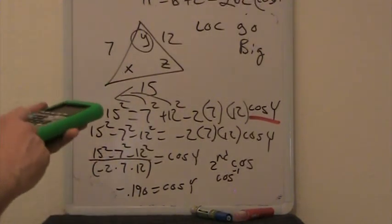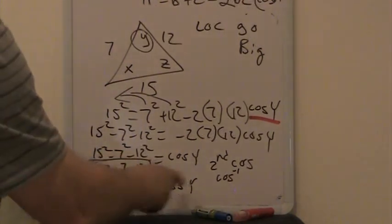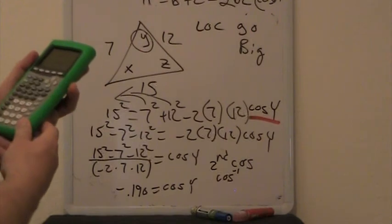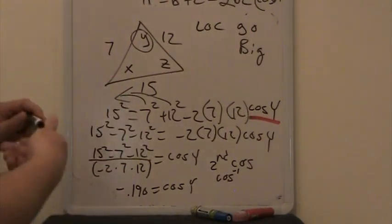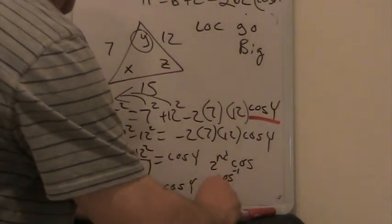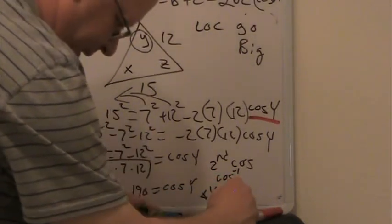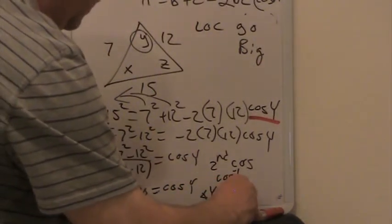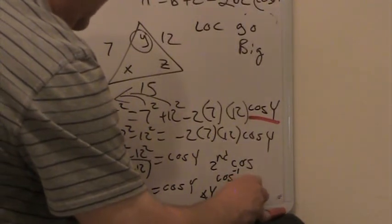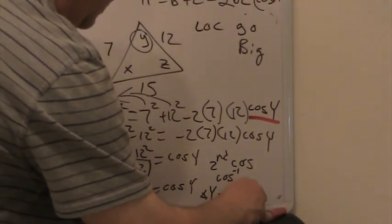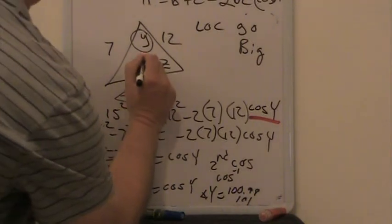So I go second cosine, and I go second answer, which plugs that in there for me. And I get 100.98 degrees. So angle y equals, I'm squeezing it in here, 100.98. Heck, we could round that to 101. So angle y up here is 101.